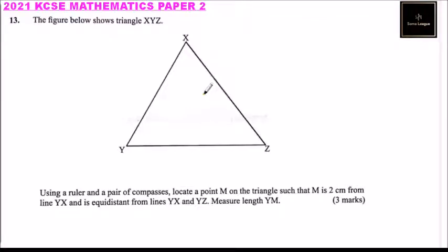Question number 13. The figure below shows triangle XYZ. Using a ruler and a pair of compasses, locate a point M on the triangle such that M is 2 cm from YX.